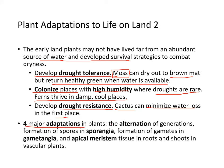The four major adaptations in plants are: alteration of generation in the life cycle, formation of spores in sporangia, formation of gametes in gametangia, and apical meristem in the roots as well as shoots in vascular plants.